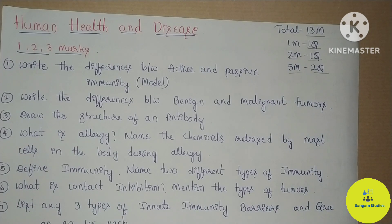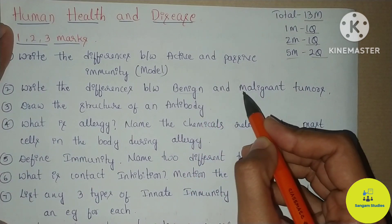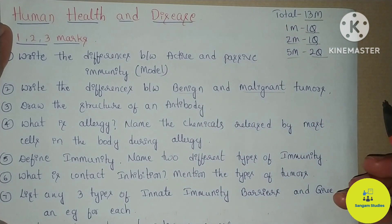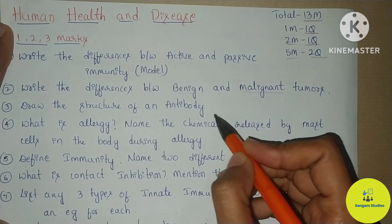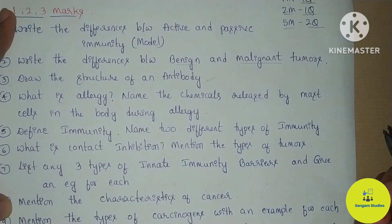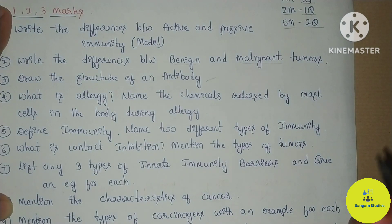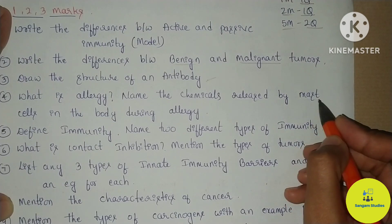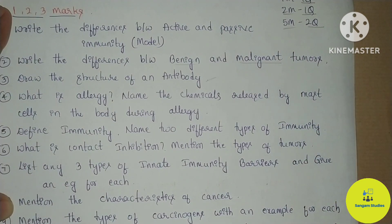Please do it. Next, write the difference between benign and malignant tumors. There will also be a chance to draw the structure of an antibody — very, very important. Allergy: name the chemicals released by mast cells in the body during allergy. This could also come as a 2-mark question.